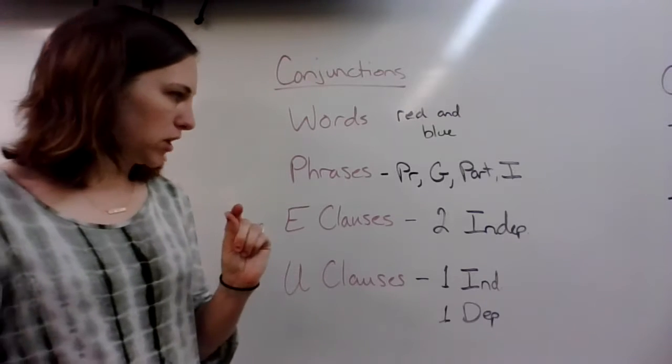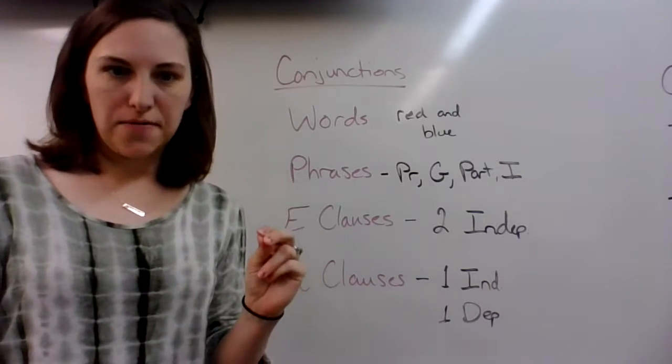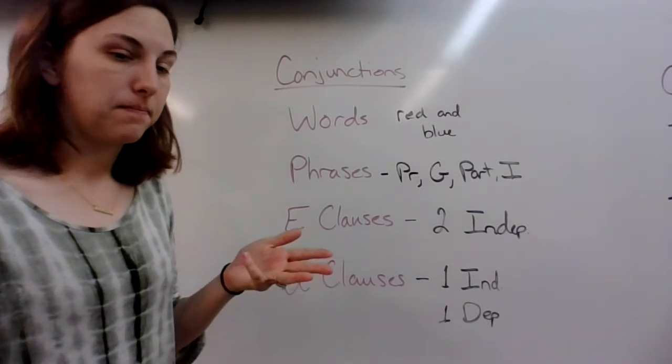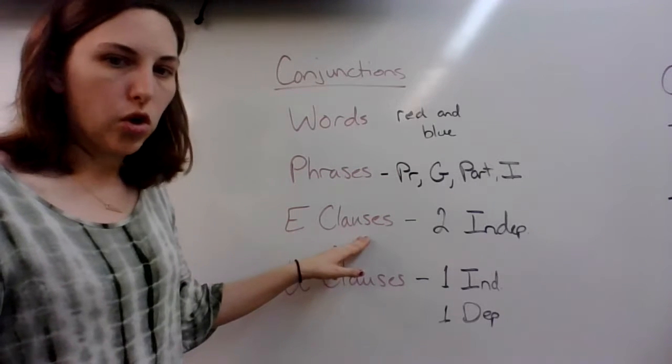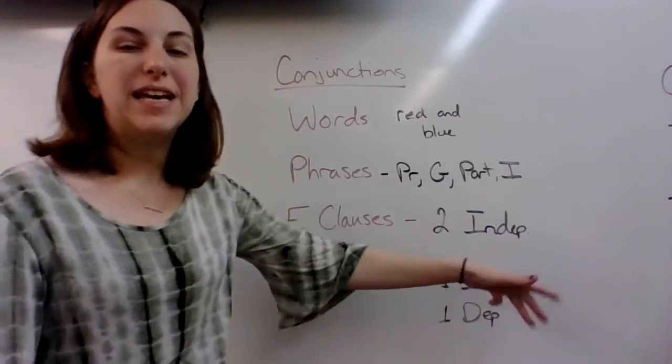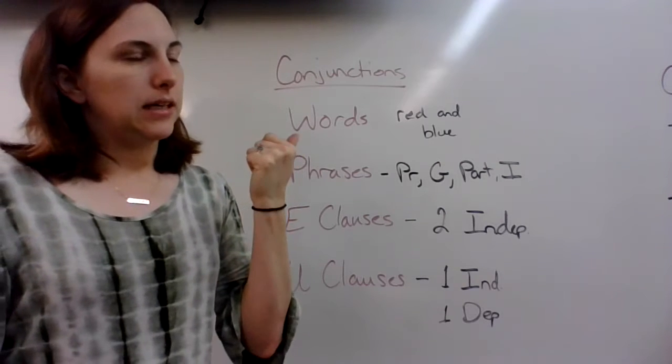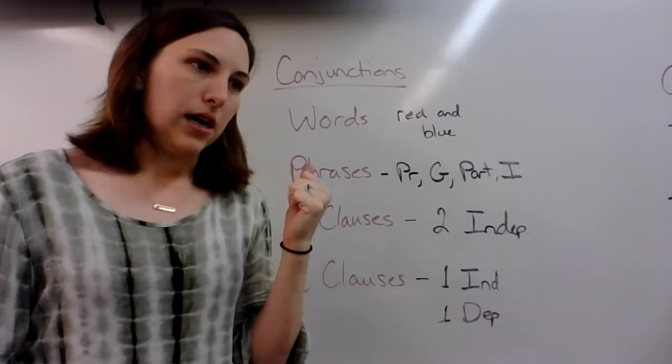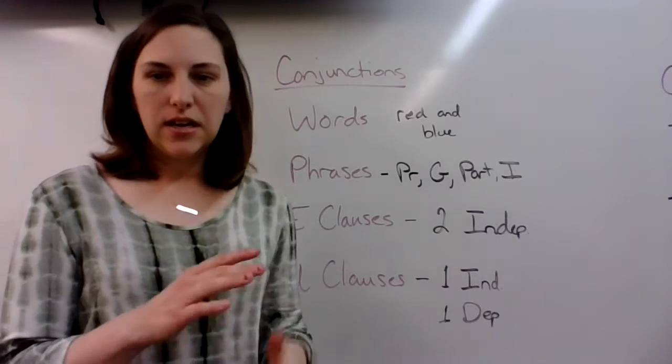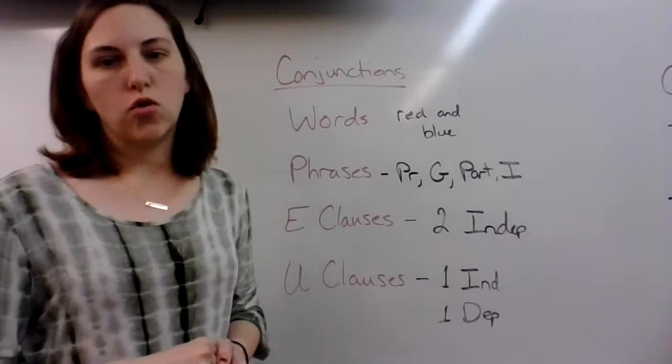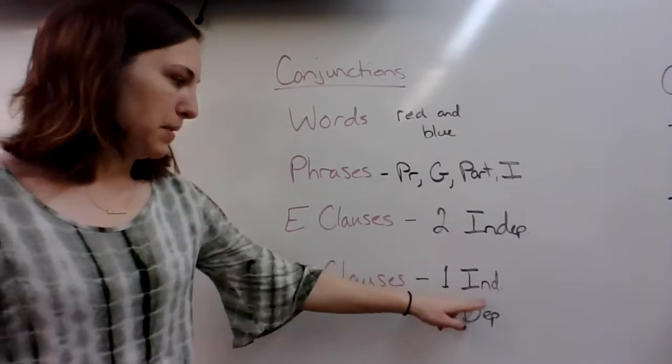And then here's where it gets just a little bit more complicated, but not too much. Words, phrases, and then clauses. Remember, clauses are a group of words with a subject and a verb. Equal clauses, or clauses of equal rank, are two independent clauses, or just two sentences. I like to play games, and I like to go to the store. Susie wants to play baby dolls, but Jason wants to play soccer. Two complete sentences joined by a coordinating conjunction in the middle.